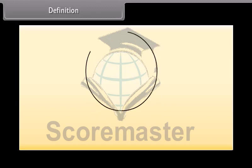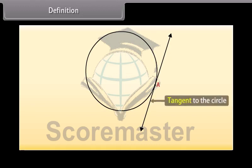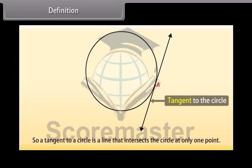And this is the third way we can draw a line and a circle. We can see that there is only one point A which is common to the line PQ and the circle. In this case the line is called a tangent to the circle. So a tangent to a circle is a line that intersects the circle at only one point.